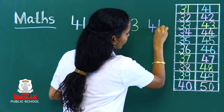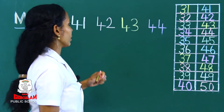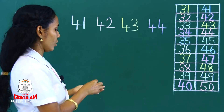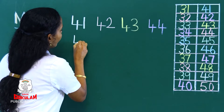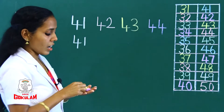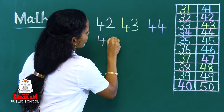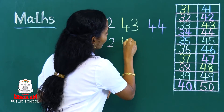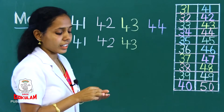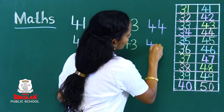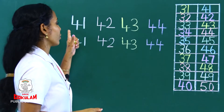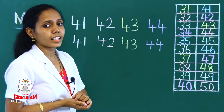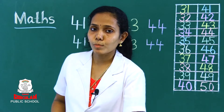44. One more time: 41, 42, 43, 44. Ok, clear idea. Next, open your textbook to the next four numbers.